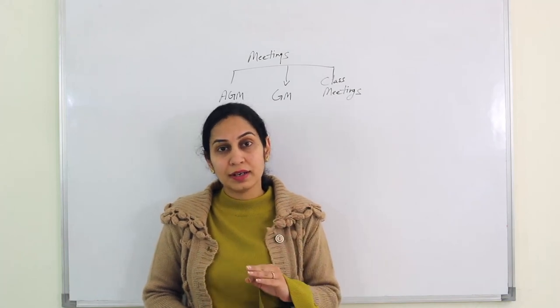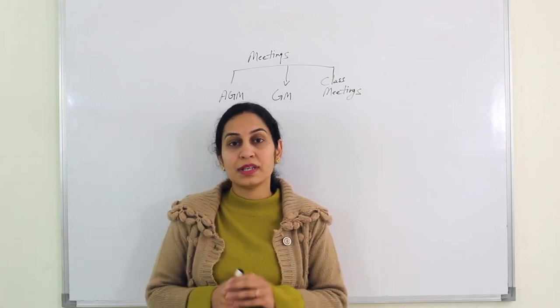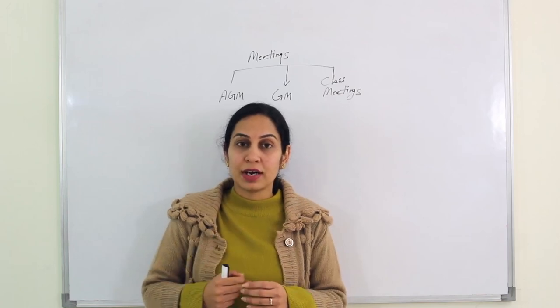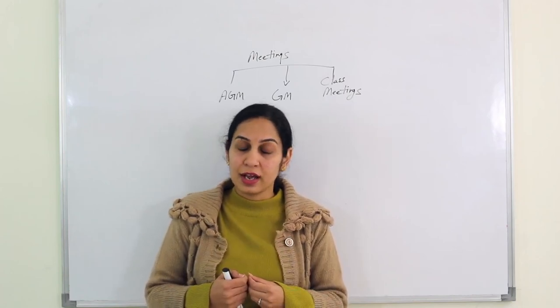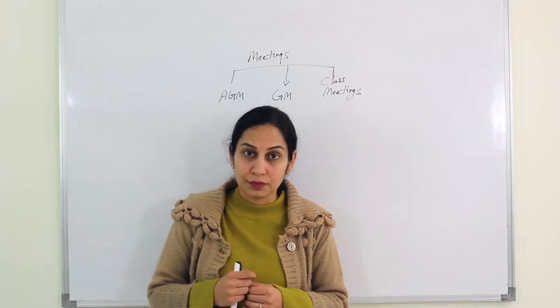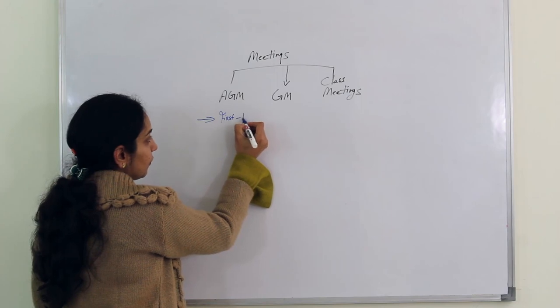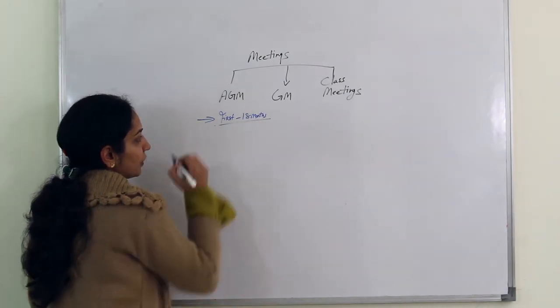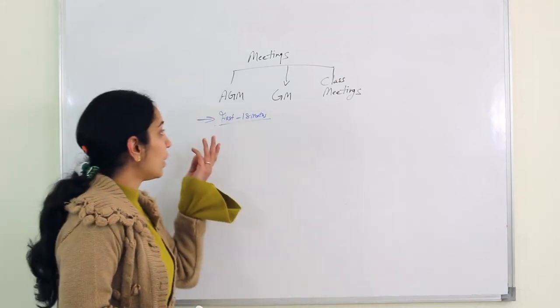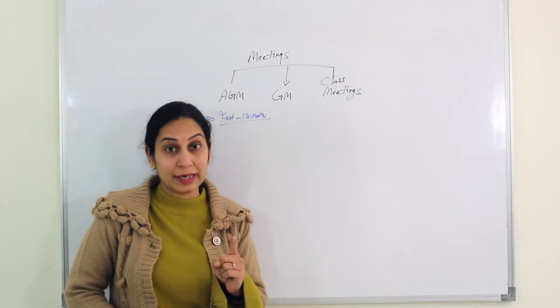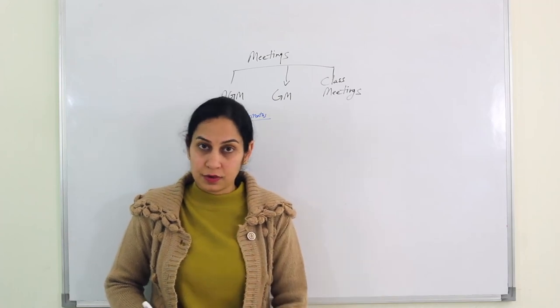Now when we have broadly understood what these three types of meetings are, we have to dig down and try to understand these meetings. When can we call these meetings? What are their agendas? What are their notice given days? And so on. So let's start with those kind of details now. Let's start with AGM. The first AGM meeting within 18 months of incorporation. For a public company AGM is a must. For private company they should or they may. So within 18 months, first AGM is mandatory. A company should definitely call for an AGM within 18 months of incorporation.